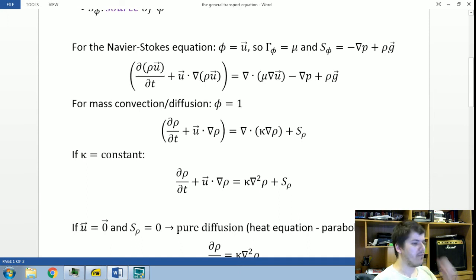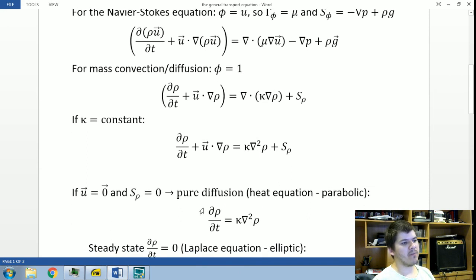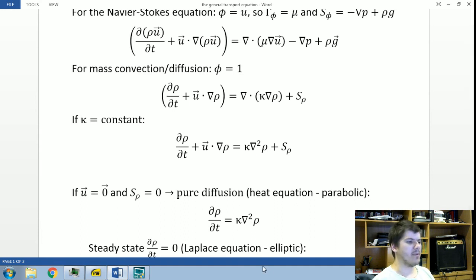If we have a zero velocity field and a zero source term, we have a pure diffusion equation, which is given by this expression here, which is also known as the heat equation. In the theory of partial differential equations, this is considered a parabolic type partial differential equation.